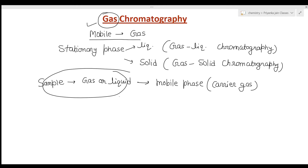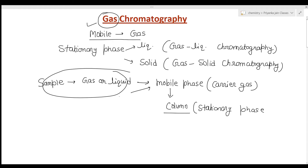The sample, carried by the mobile phase, is directed to the chromatographic column where the stationary phase is present. The sample's components then distribute themselves between the mobile phase and the stationary phase. Based on their ability to separate, the sample components get separated — this is the basic technique of gas chromatography.